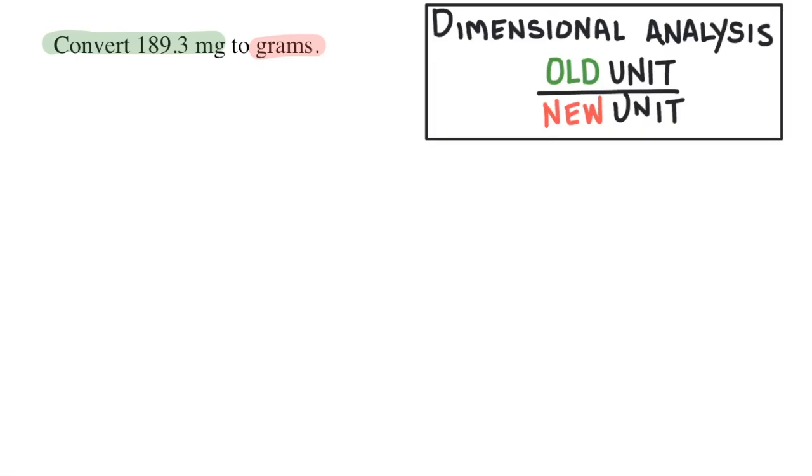Here's the kind of homework question you would need to solve for your chemistry class. Convert 189.3 milligrams to grams. To solve this problem, I'm going to use dimensional analysis. This is a system that converts one unit into another unit with a ratio that compares the units to one another. The two units we are comparing in this question are milligrams and grams.